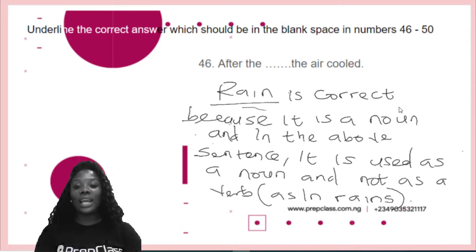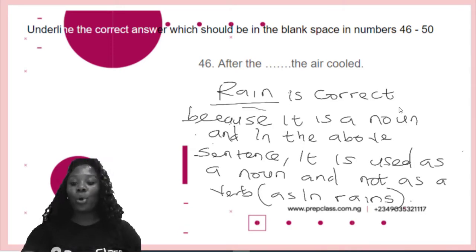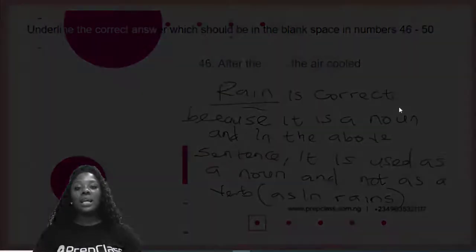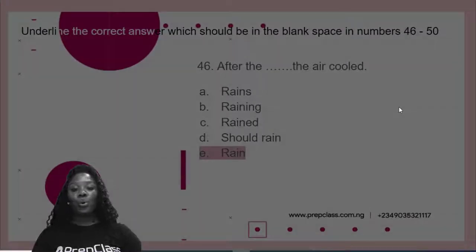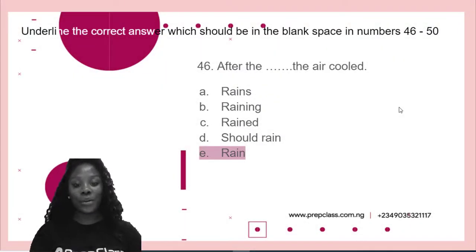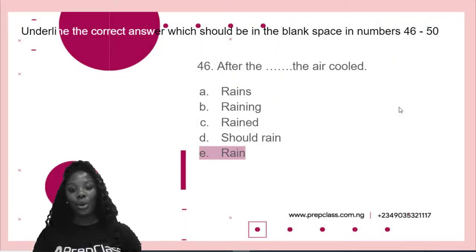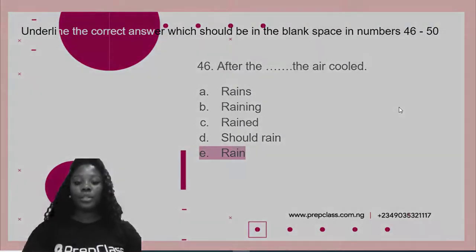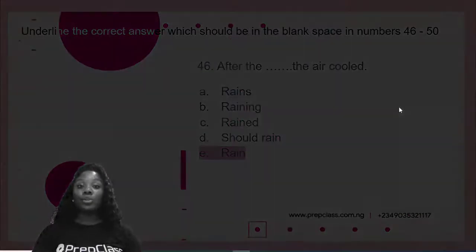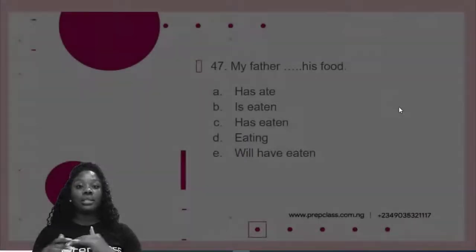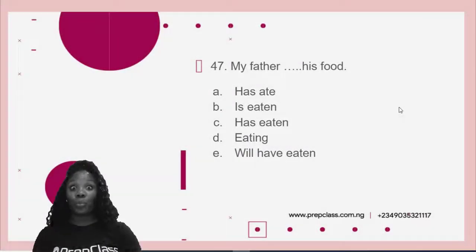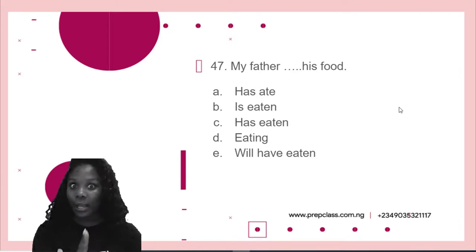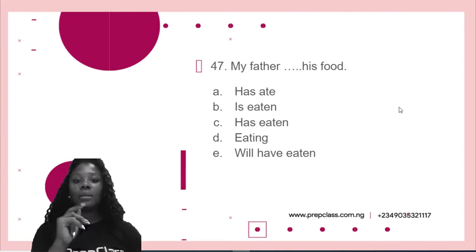So, after the rain, the air cooled. And we have option E as the correct answer: rain. Rain usually functions as a noun, while rains functions as a verb. Don't forget that.